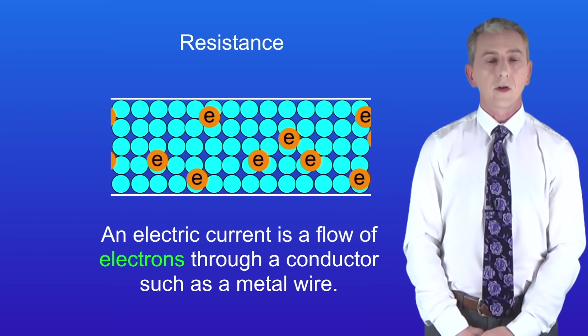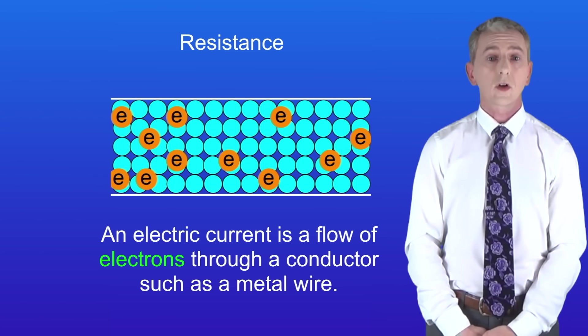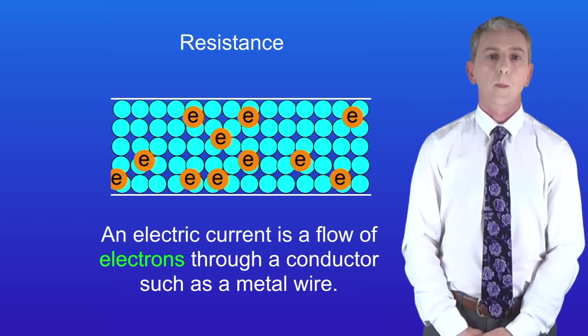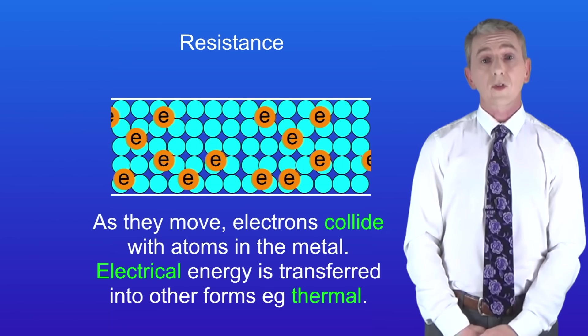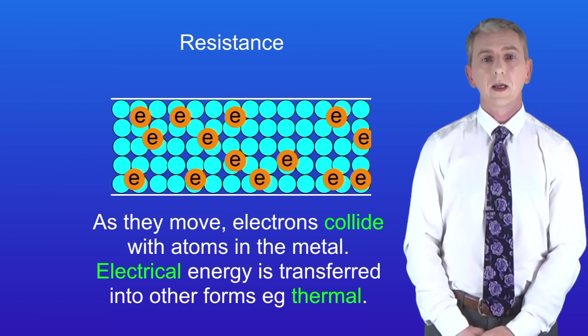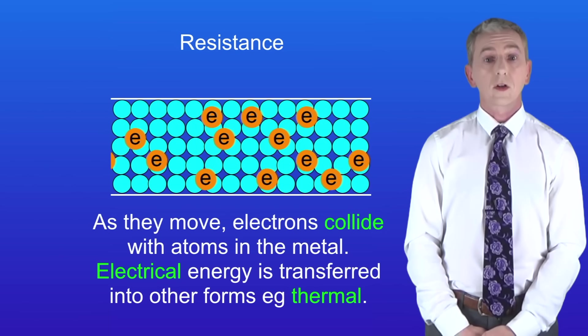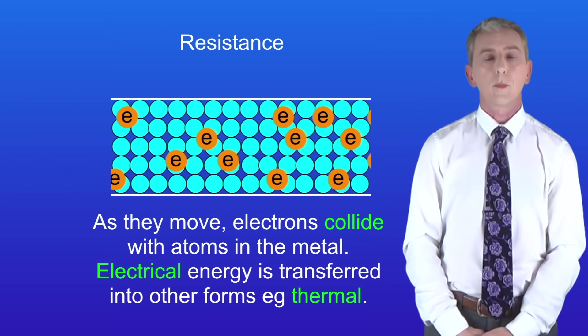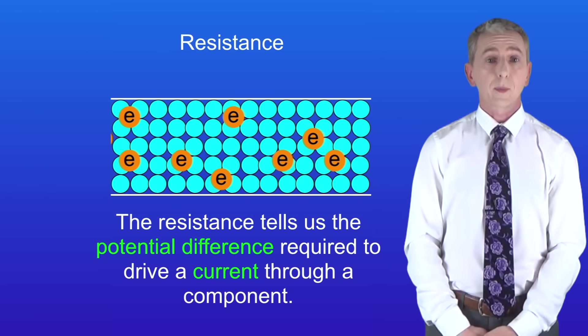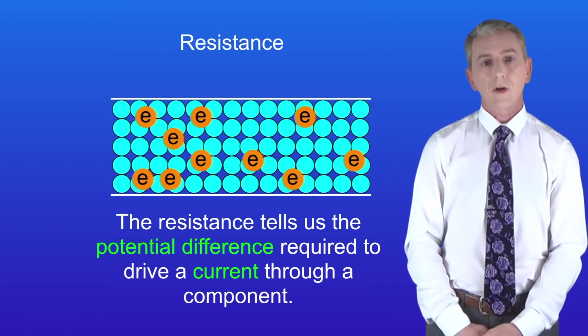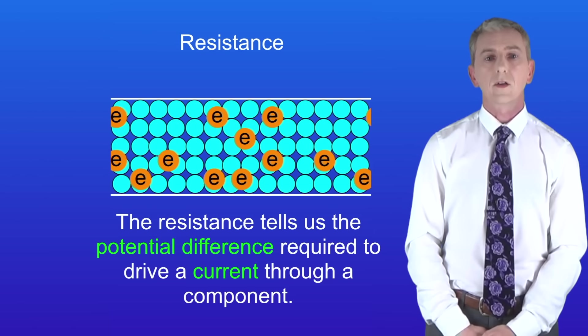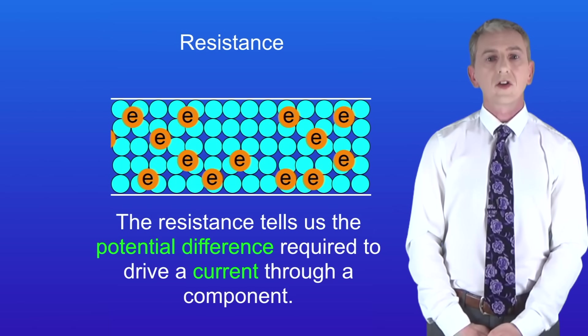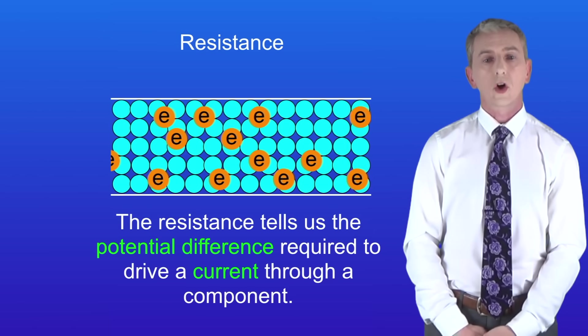As we've said, an electric current is a flow of electrons through a conductor such as a metal wire. As they move, electrons collide with atoms in the metal. Electrical energy is transferred into other forms of energy, for example thermal. The resistance simply tells us the potential difference required to drive a current through a component. In other words, how much energy is required to push a coulomb of charge through.